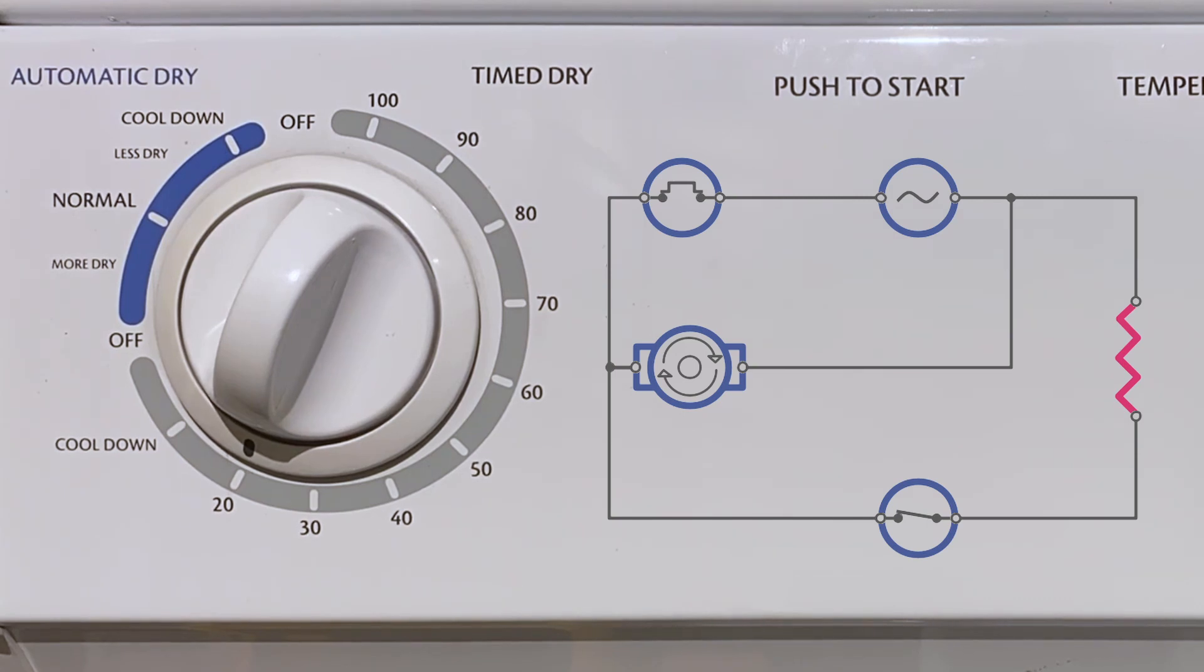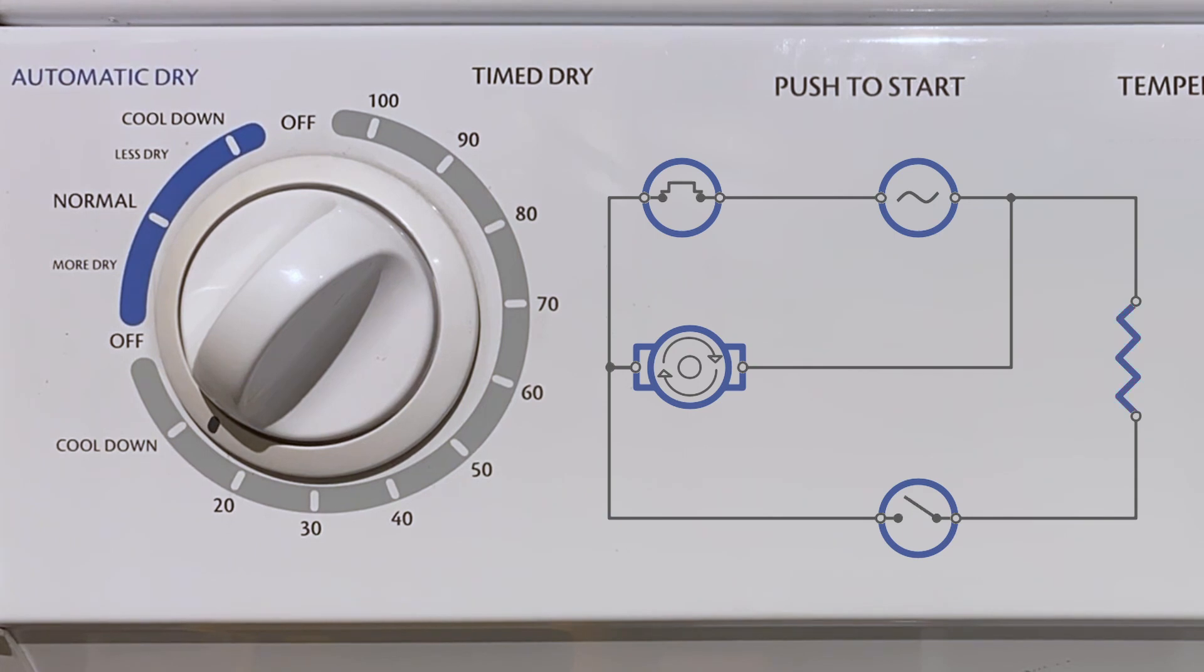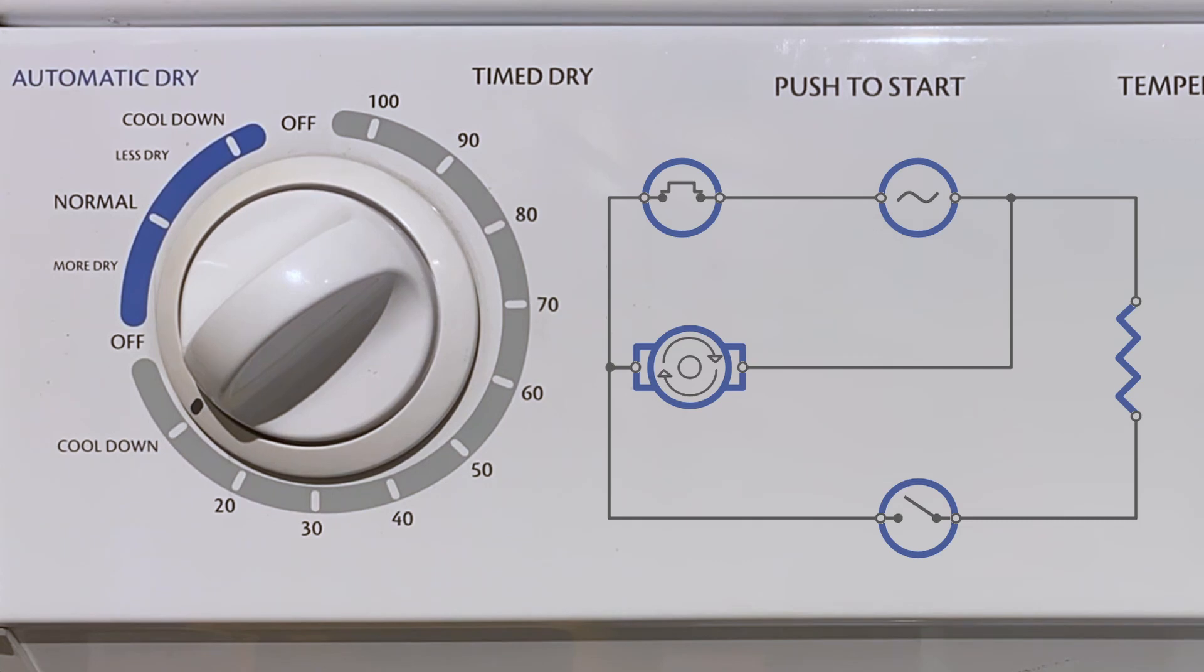Once the inside air temperature reaches 150 degrees Fahrenheit, the thermal switch will open causing the heating element to turn off. Once the air cools back down to 120 degrees Fahrenheit, the thermal switch will close again and this cycle repeats until the knob reaches cool down, at which point the heating element stays off.